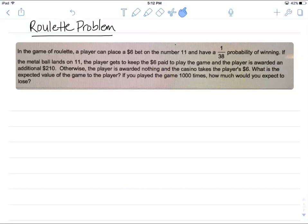In this game of roulette a player places a $6 bet on a single number and the player has a 1 over 38 probability of winning. If the ball lands on the player's number, the player gets to keep the $6 and is awarded an additional $210.